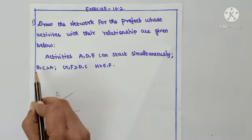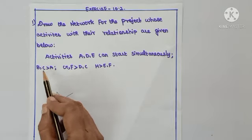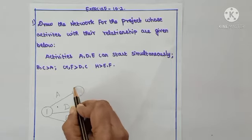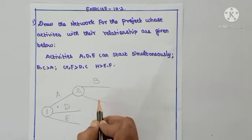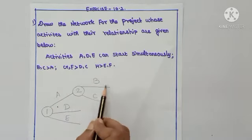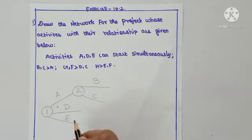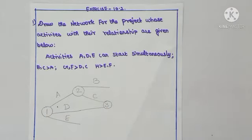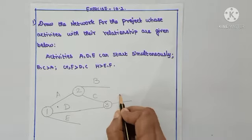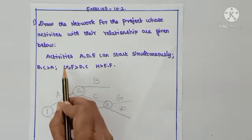Next: B and C come after A. So after A we mark event number 2, from which we have two activities — B and C. The next idea: G and F come after C and D. So we connect C and D to the next event, numbered 3, from which G and F are drawn.